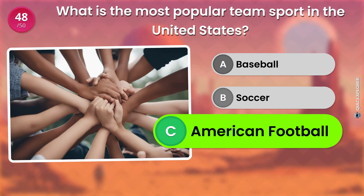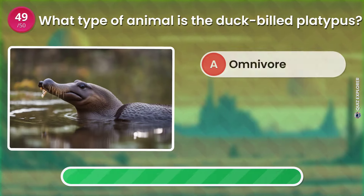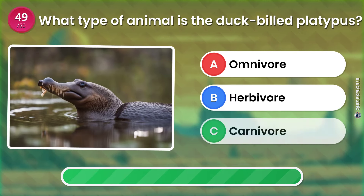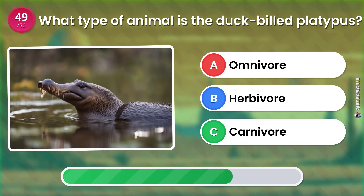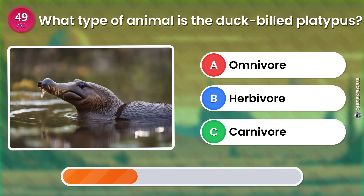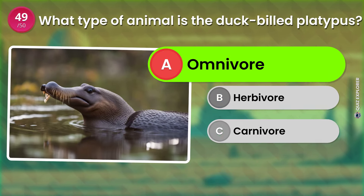What type of animal is the duck-billed platypus? Omnivore. Herbivore. Carnivore. The answer is: Omnivore.